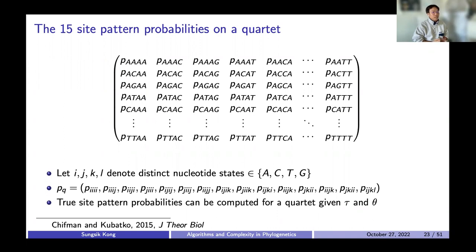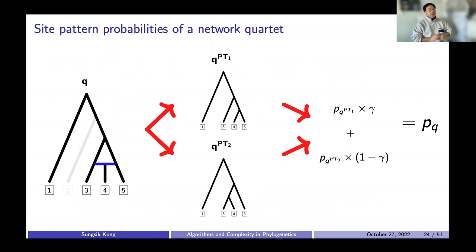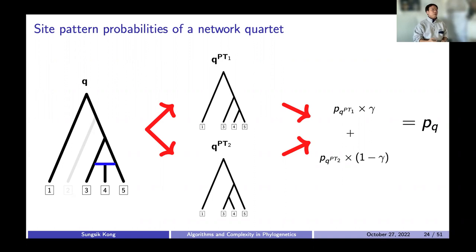Letting I, J, K, and L denote distinct nucleotide states A, C, T, or G, we can generalize the 256 site patterns into 15 site patterns, which we call the set pq. Fortunately, the true site pattern probabilities for these 15 generalized site patterns can be computed for a quartet given a set of species divergence times and the population size parameter theta, as shown in Schiffman and Kubatko 2015. Given that we can compute the true site pattern probabilities of any quartet tree, we can also compute the site pattern probabilities of a quartet extracted from a network — which is simply the weighted sum of the quartets with the same four tips decomposed over different parenter trees, where the weight is the probability assigned to the parenter tree that the quartet was decomposed from.